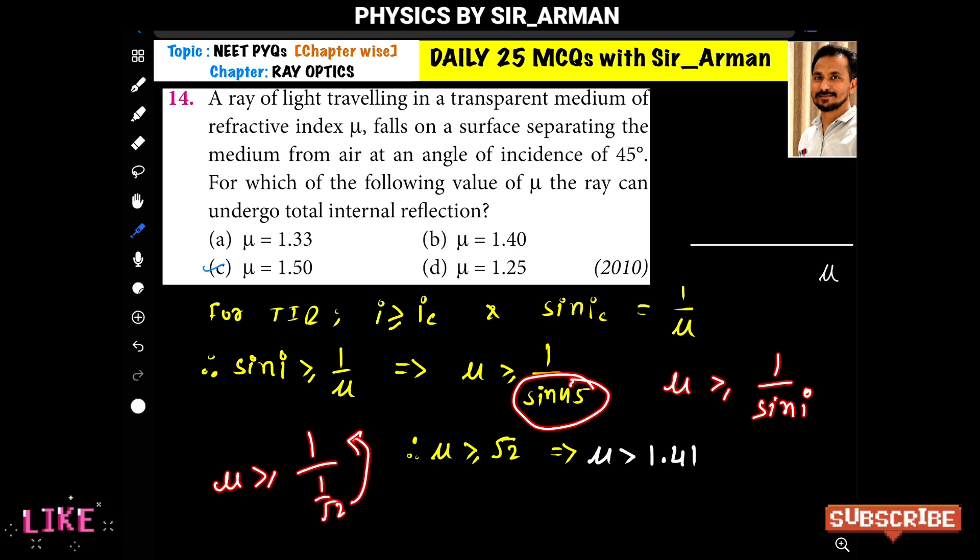And the value of root 2 is 1.41. Therefore, μ should be greater than 1.41, and that is option number C, which is the only option which is greater than 1.41.